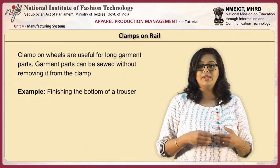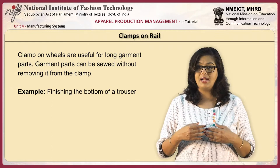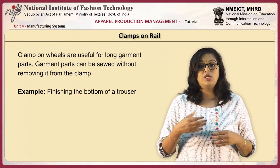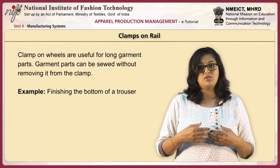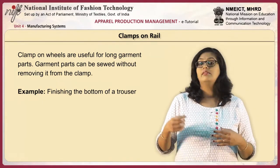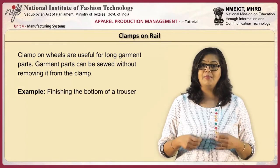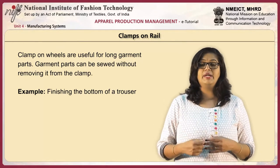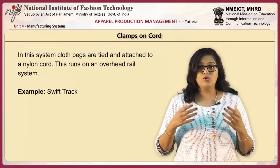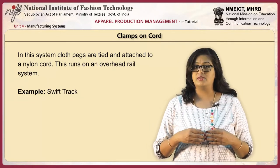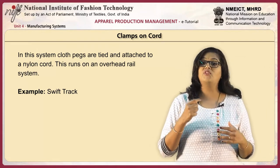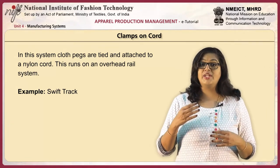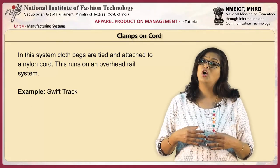Another variation is clamps on rails. Clamps on wheels are useful for sewing long garment parts. Garment parts can be sewn without removing them from the clamp and are generally moved overhead. An example of clamps on rails could be finishing the bottom of a trouser, wherein the trouser piece is not removed from the clamp and is sewn directly on the sewing machine. Another variation is clamps on cords. In this system, cloth pegs are tied and attached to a nylon cord, which runs on an overhead rail system. One of the major examples is swift track, which uses the clamps on cord system of bundle carrying.